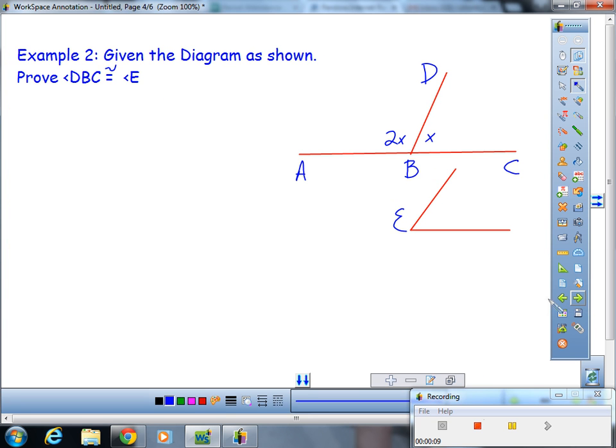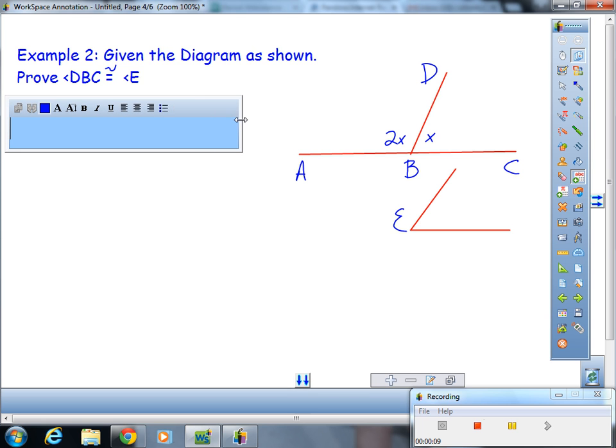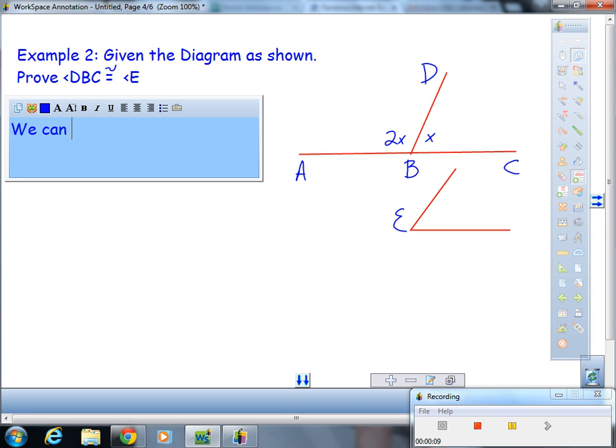Let's see another example. Given the diagram as shown, prove that angle DBC is congruent to angle E. Well here we will use kind of a combination of paragraphs and then mathematics and then paragraphs. So we can assume that angle ABC is a straight angle.